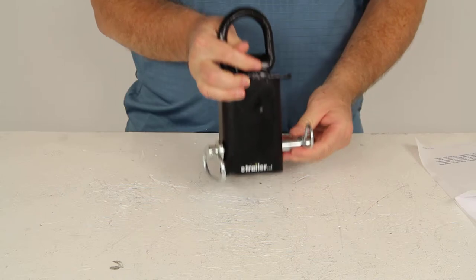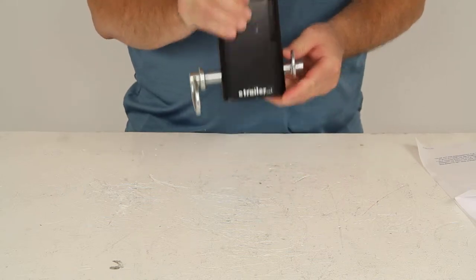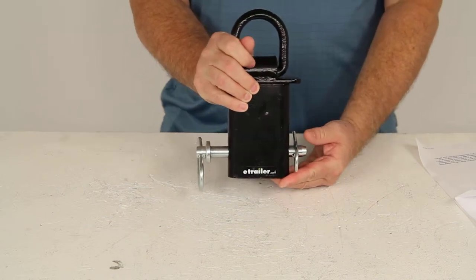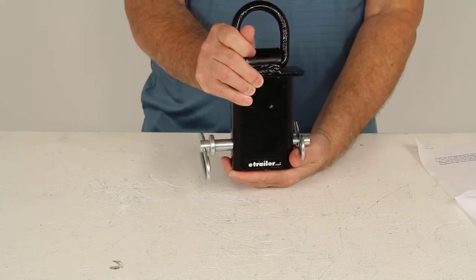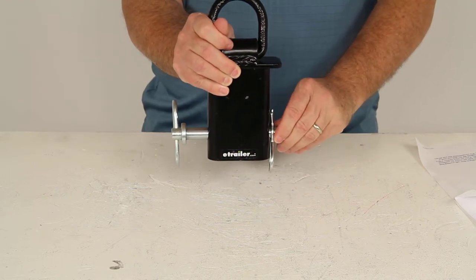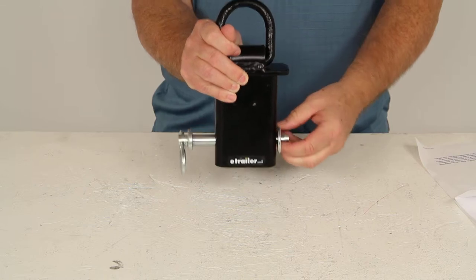It's a very simple slide in installation. You just remove the pin and clip, slide this into your standard 2 inch by 4 inch stake pocket on a flatbed truck or trailer and then secure it with this included half inch diameter hitch pin and clip.